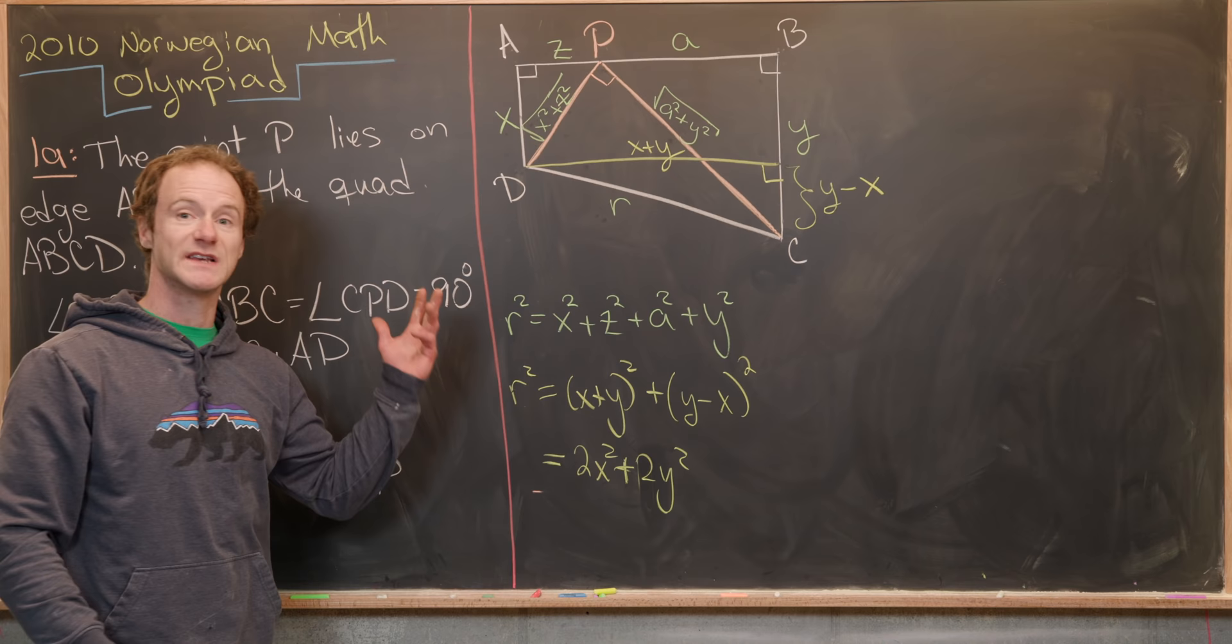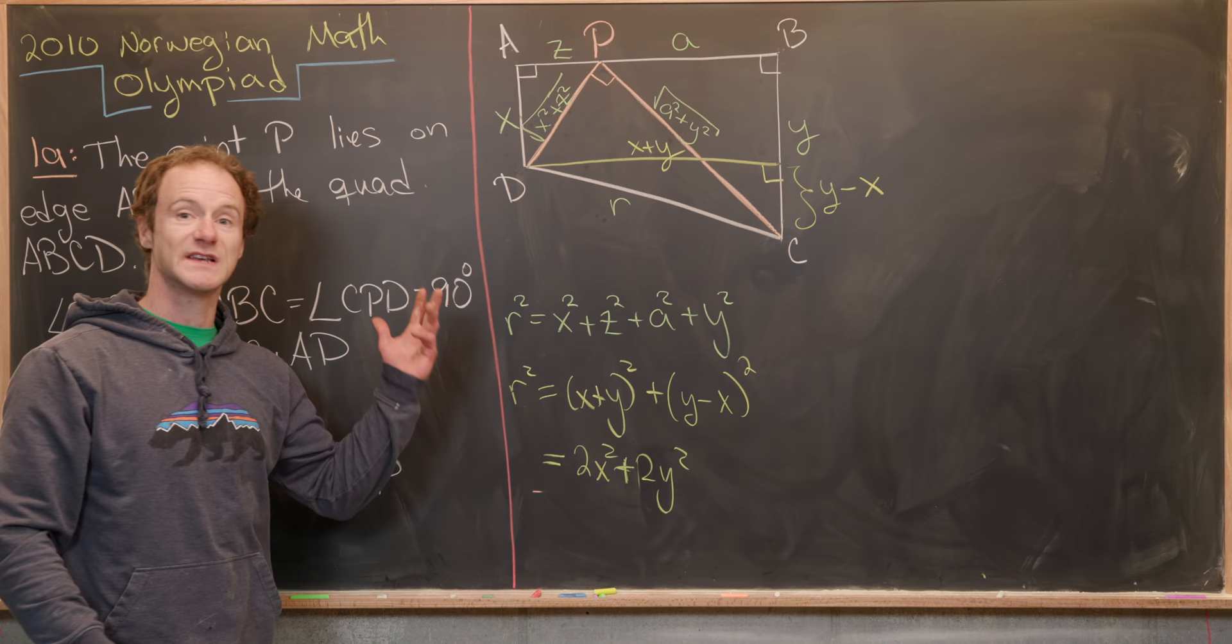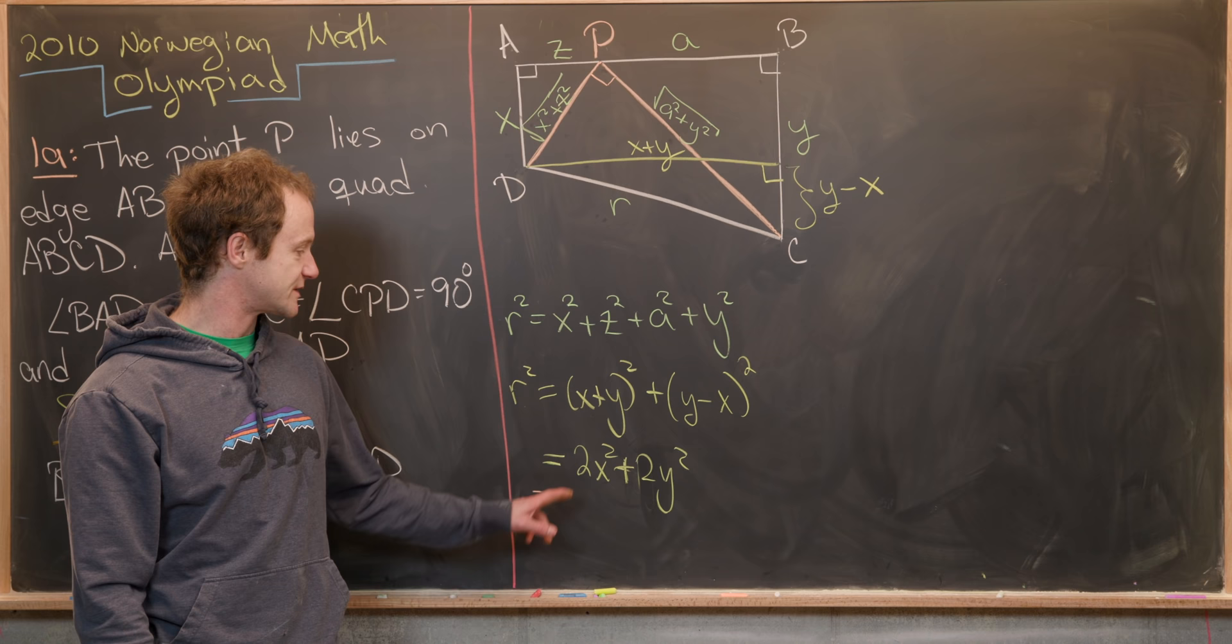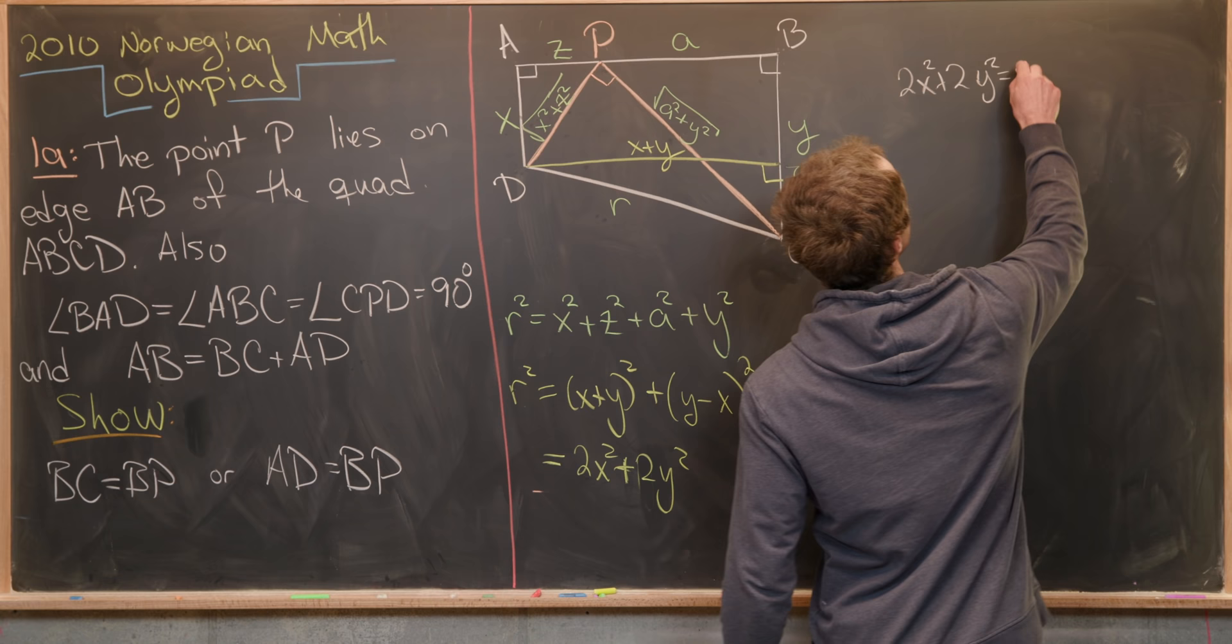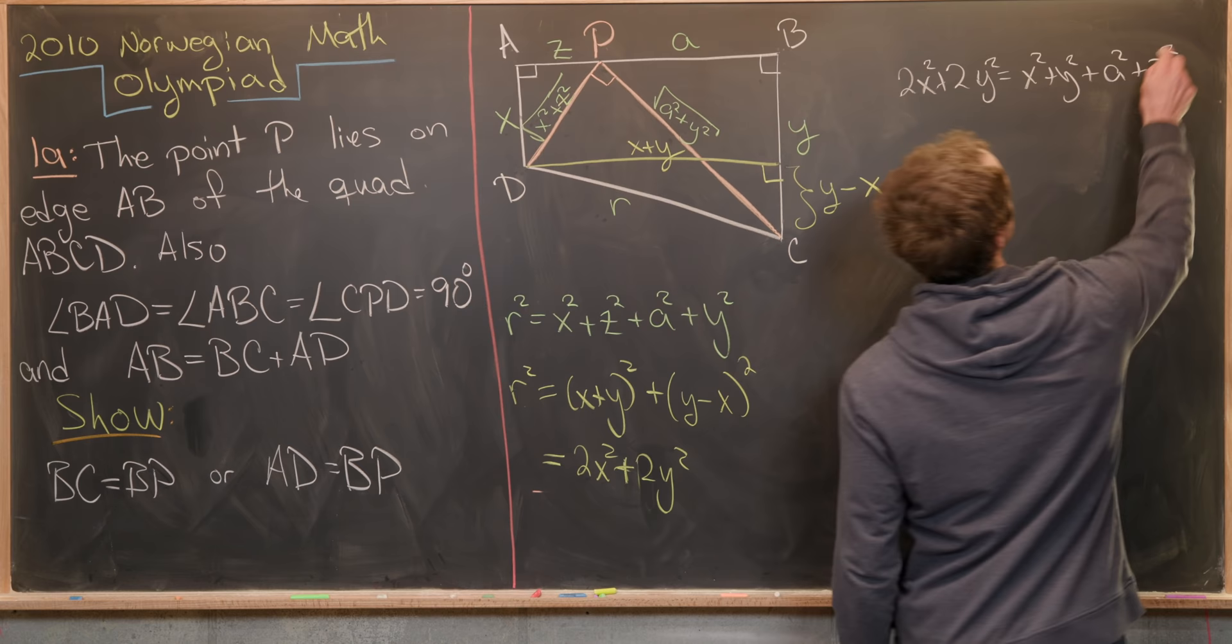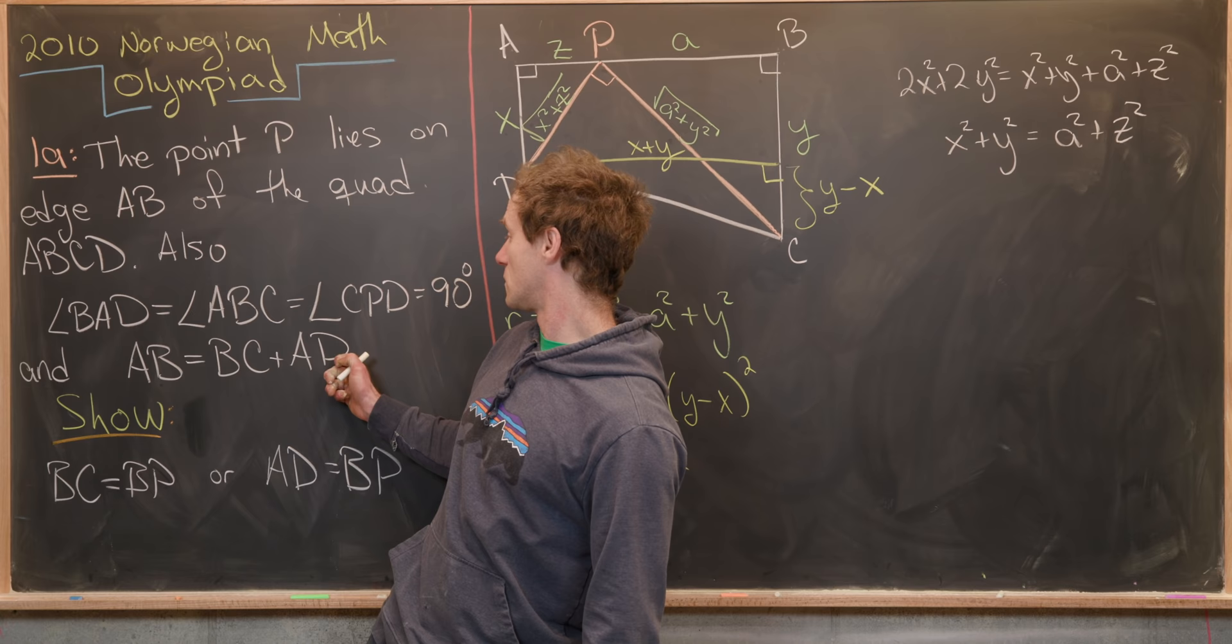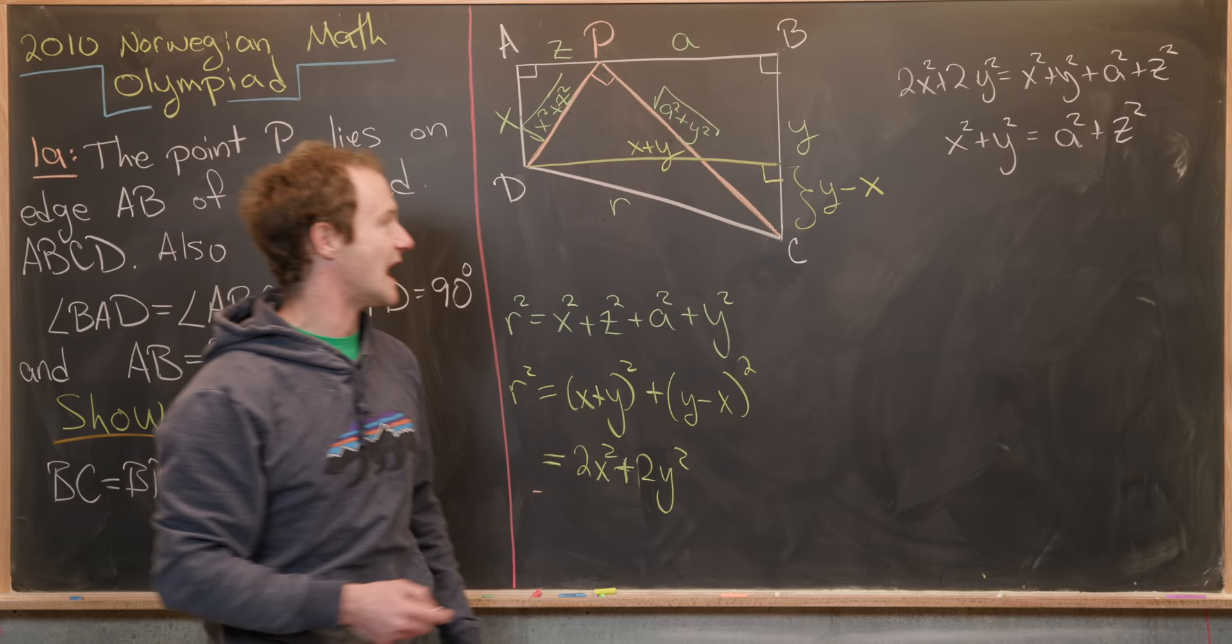Great. So now we're going to impose a system of equations built out of setting R squared equal to R squared along with this right here. So let's see, setting R squared equal to R squared, we have 2X squared plus 2Y squared equals X squared plus Y squared plus A squared plus Z squared like that. Simplifying a little bit, we get X squared plus Y squared equals A squared plus Z squared. Again, by this rule right here, we know that X plus Y is the same thing as A plus Z. So that's our other equation.